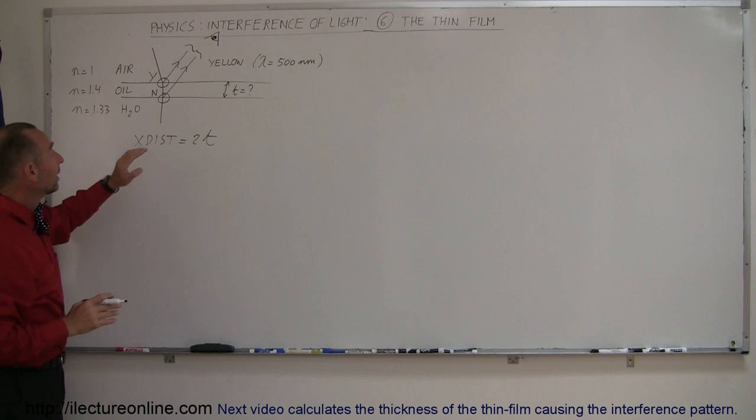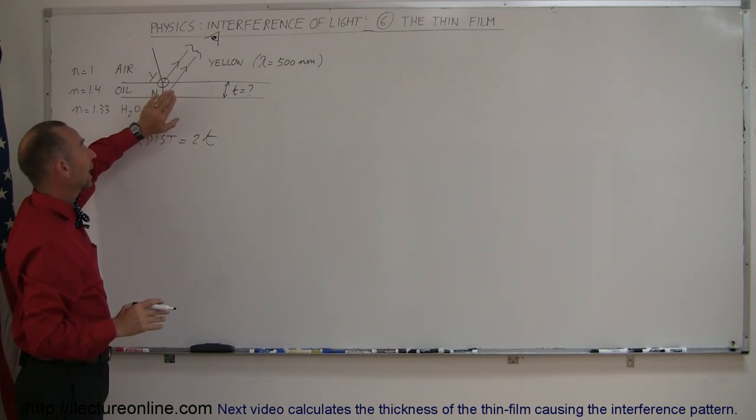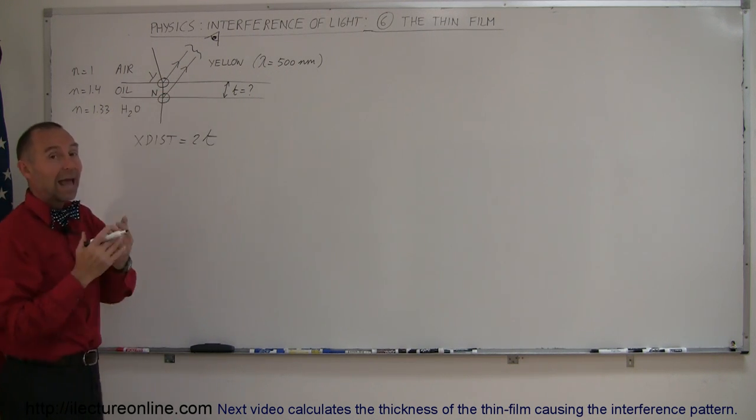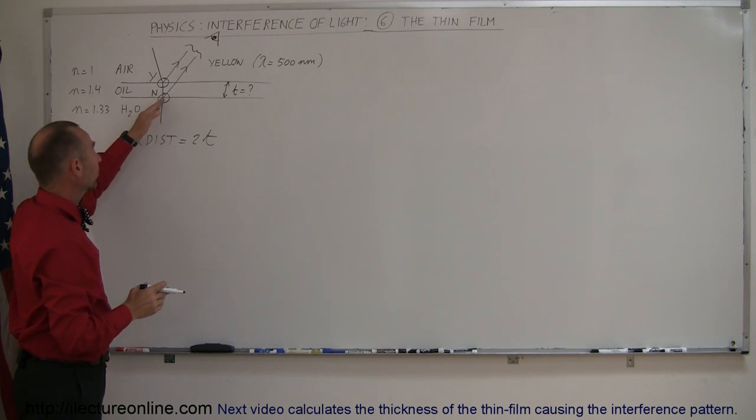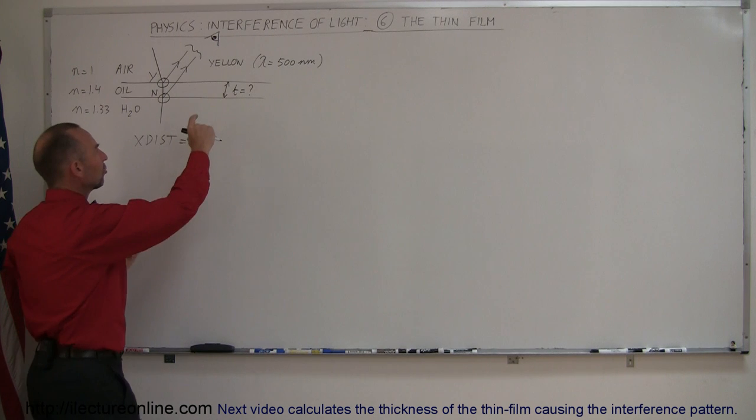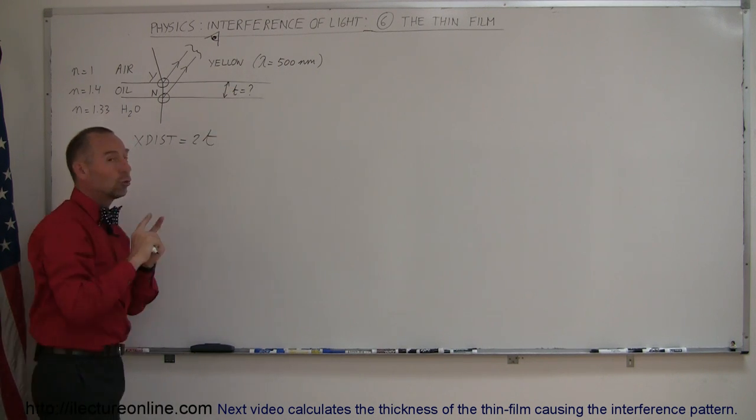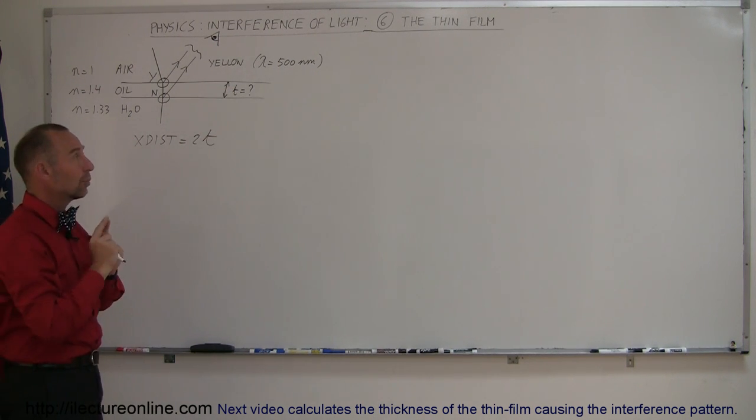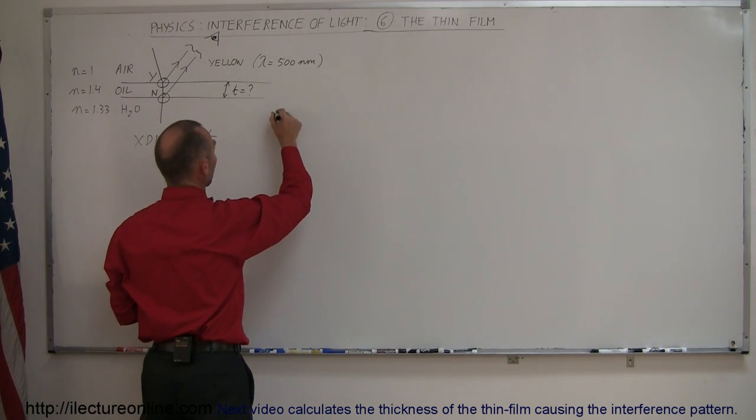Which means that the first beam that gets reflected already has an immediate 180 degree flip or a half wavelength flip. The second beam does not have a wavelength shift. That means if the extra distance travel was zero, the two waves will already be 180 degrees out of phase.